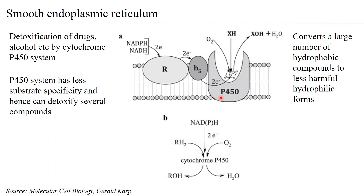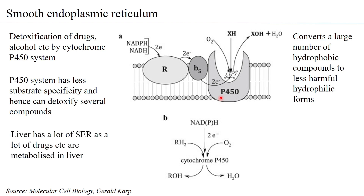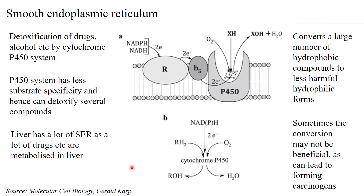The cytochrome P450 system does not have very high substrate specificity, which means it can detoxify a large number of compounds by converting them from hydrophobic to hydrophilic form. Liver has a lot of smooth ER because drugs and alcohol are metabolized there. Although in some cases cytochrome P450 conversion can produce carcinogenic compounds, the majority of the time it is performing detoxification.